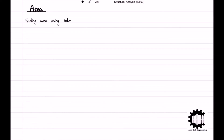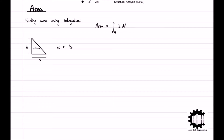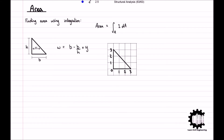The area of a region can also be calculated using integration, where the area of the region is equal to the integral of 1 with respect to the area. To introduce this concept, we will consider a right-angled triangle with a base of B and a height of H. For every value that the y-coordinate increases, from the base to the top of the triangle, the width of the triangle W is equal to B minus B over H times Y. To prove this, imagine a triangle with a base of 3 and a height of 3. At a y-coordinate value of 1.5, the width equals 3 minus (3/3) times 1.5, which equals 1.5, as expected from intuition.